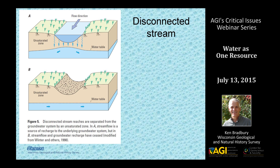Sometimes streams and lakes can become disconnected from the groundwater system, meaning the water table drops below the bottom of the surface water body, creating an unsaturated zone. There's often a mound in the water table below that, and water still moves from the stream to the groundwater system but in an unsaturated way. The lower diagram shows a system that has become completely disconnected, where the stream has actually become dry.